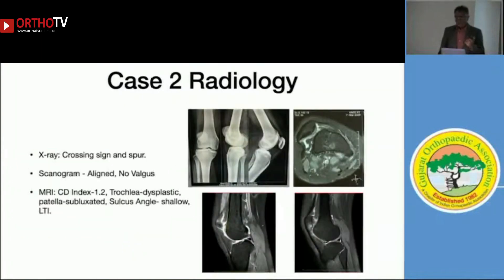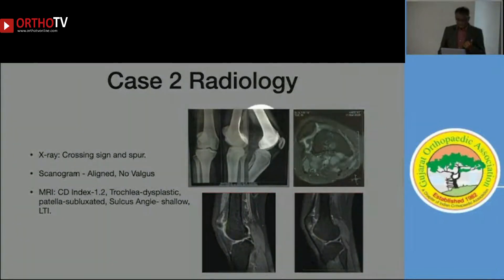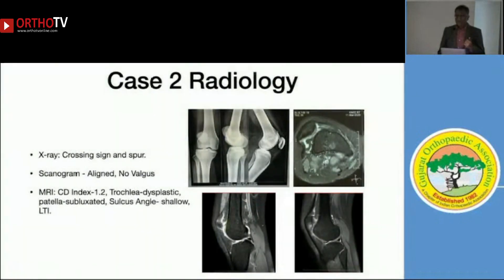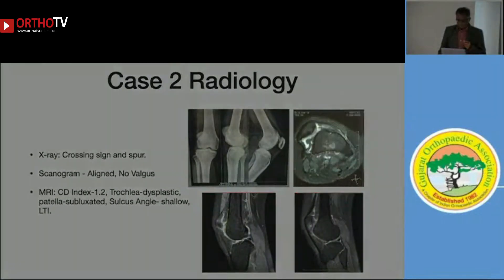In our 24-year-old female case, the lateral X-ray clearly showed a trochlear spur — exactly the same pattern described earlier — with the patella subluxated and a slight patella alta, though not severe on measurement.